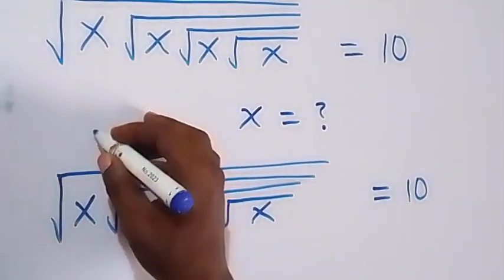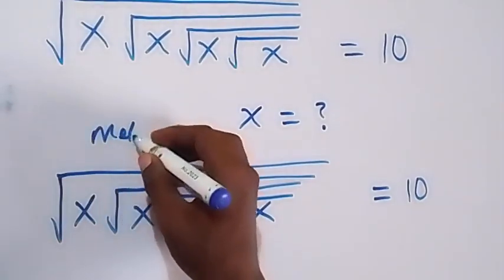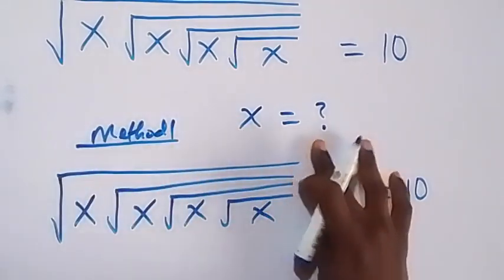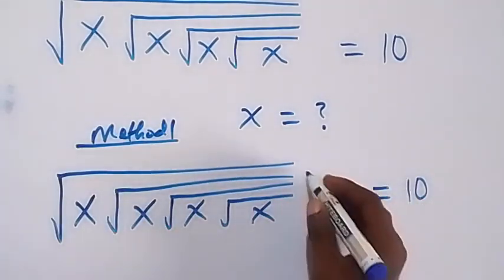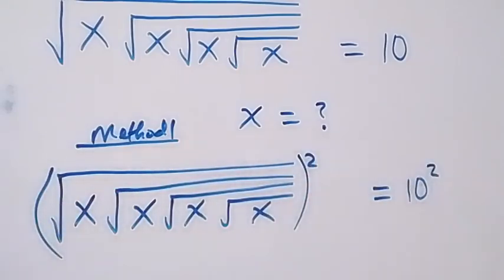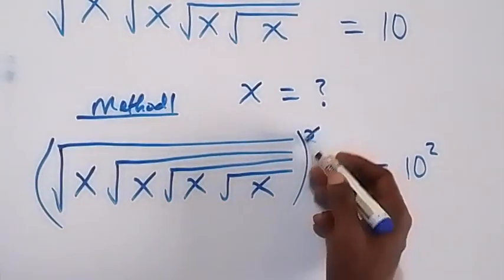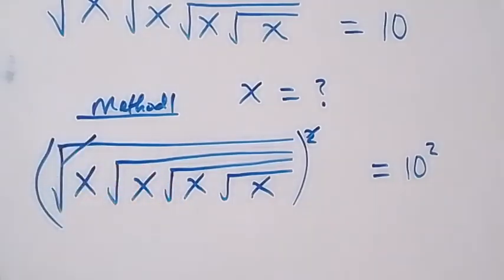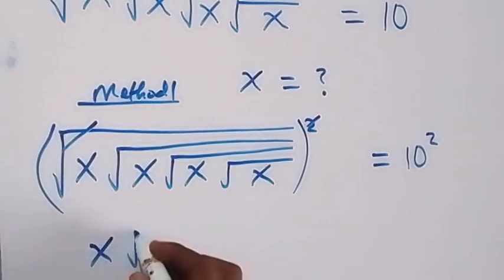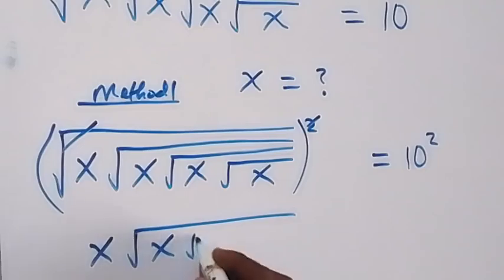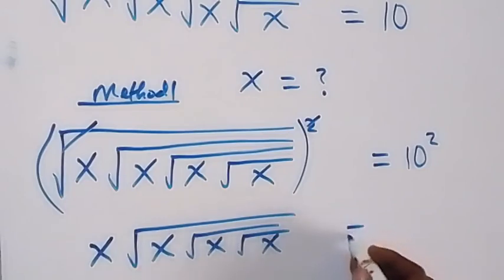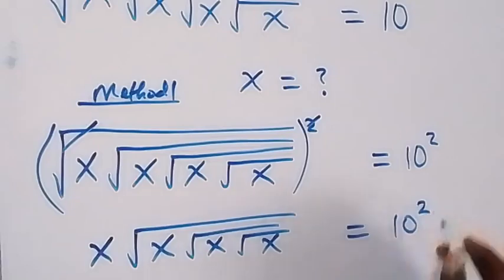Now the first method we are using here — Method One — let's take the square on both sides. So when we square this side we also square this side, and the square here cancels the square root. This gives us x, root x, root x, then root x, which equals 10 squared.